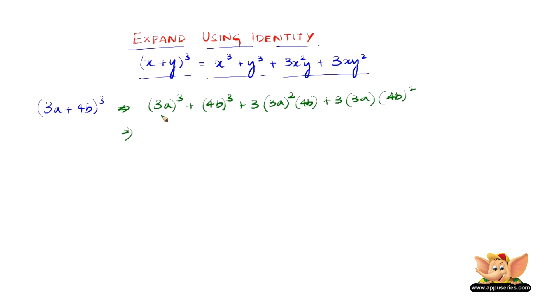Now 3a the whole cube is 3 into 3 is 9, 9 into 3 is 27, so therefore it is 27a cube. Plus 4 cube is 4 into 4 is 16 and 16 into 4 is 64, so 64b cube. Plus 3 into 3a square is 9a square into 4b, plus 3 into 3a into 4b square is 16b square.